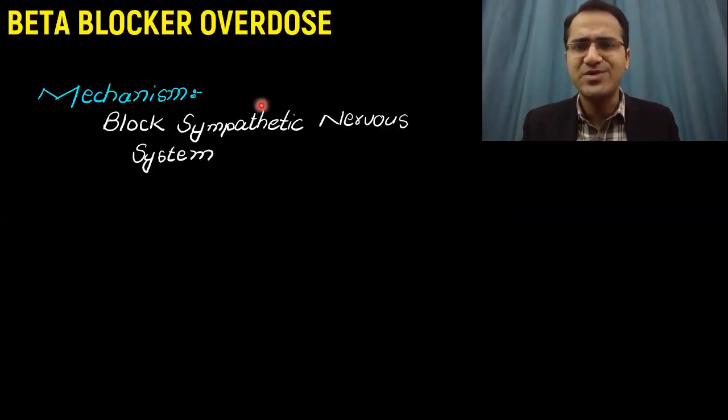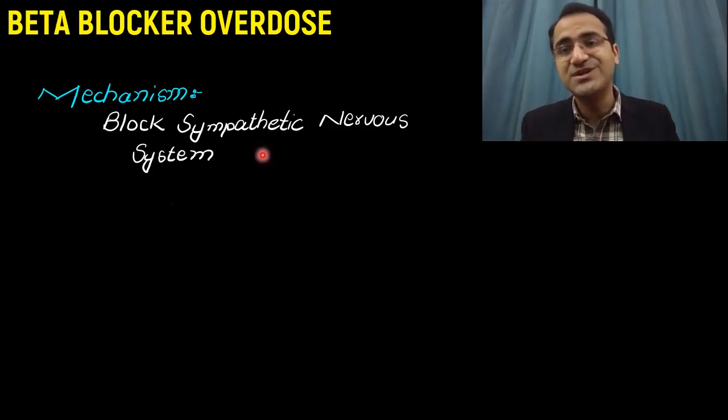First of all, what are beta blockers? Beta blockers are drugs that block the sympathetic nervous system. They mediate their action by blocking the sympathetic receptors present on the nerves.